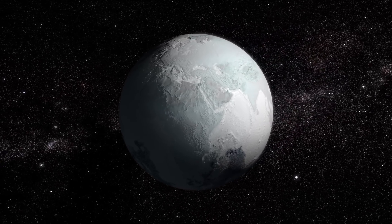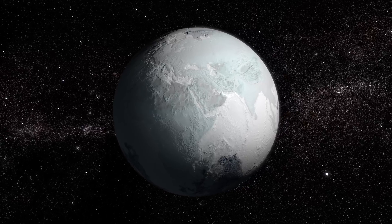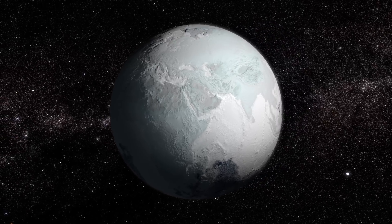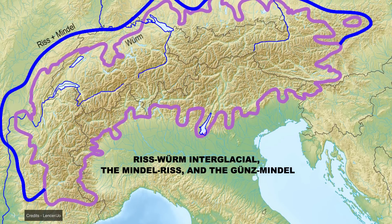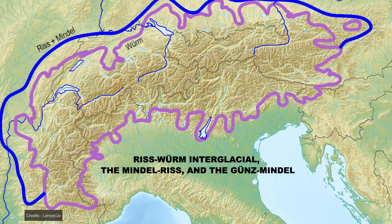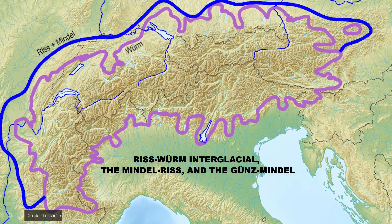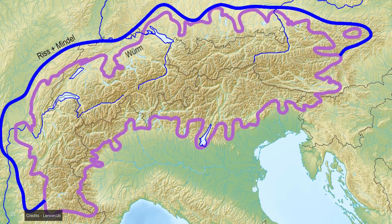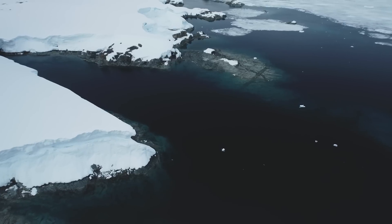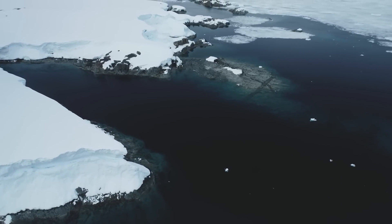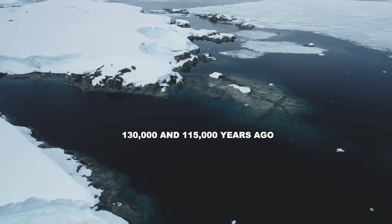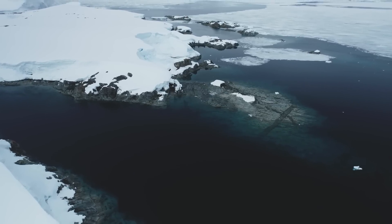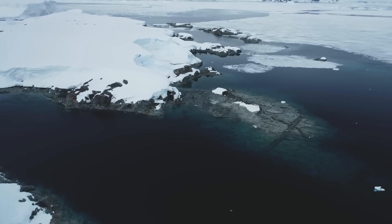Before the Holocene, the Earth experienced several significant interglacial periods that marked the planet's climate. The three most recent before the current one were the Rys-Wurm interglacial, the Mindel-Rys, and the Gunz-Mindel, each of which left important traces in the planet's paleoclimatic records. The Rys-Wurm interglacial, which occurred approximately 130,000 to 115,000 years ago, is fascinating because global temperatures were even higher than today.